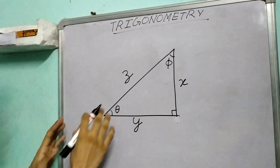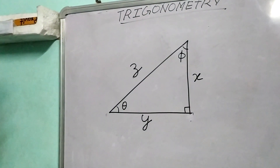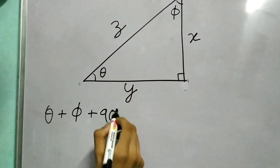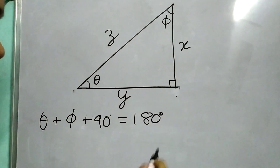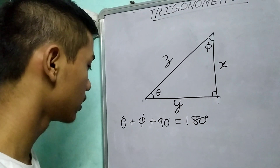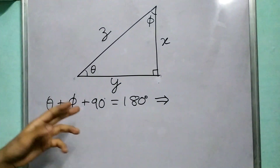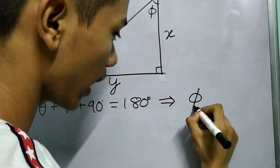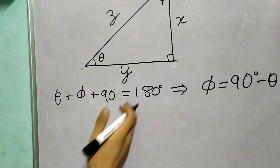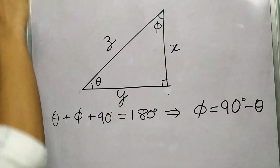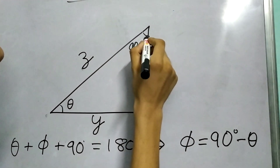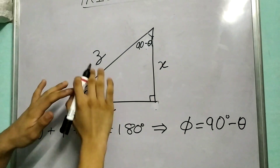In order to prove the result, we first need to find a relation between theta and phi. You should be able to do this on your own. Theta plus phi plus 90 degrees equals 180 degrees — we know this from the angle sum property of a triangle. Rearranging, we get phi equals 90 degrees minus theta.